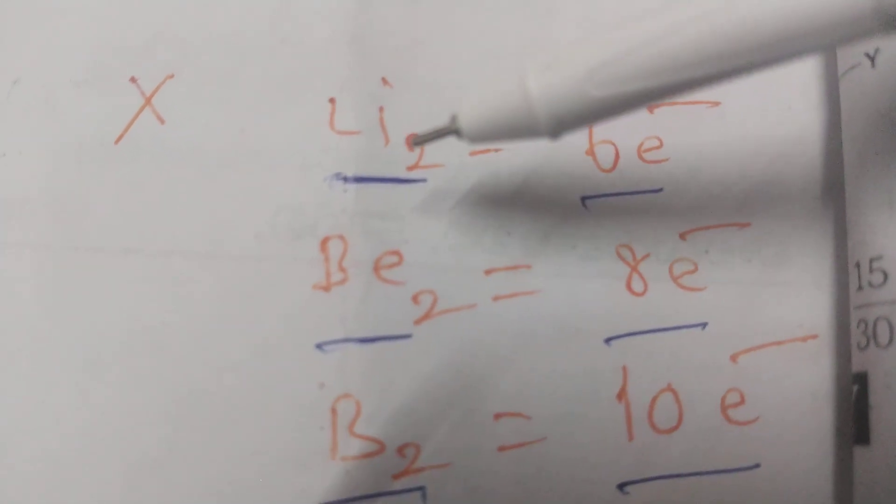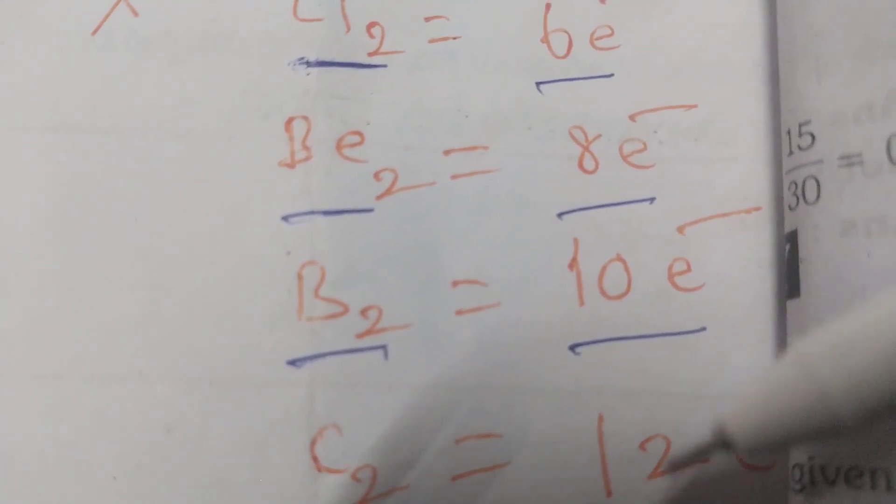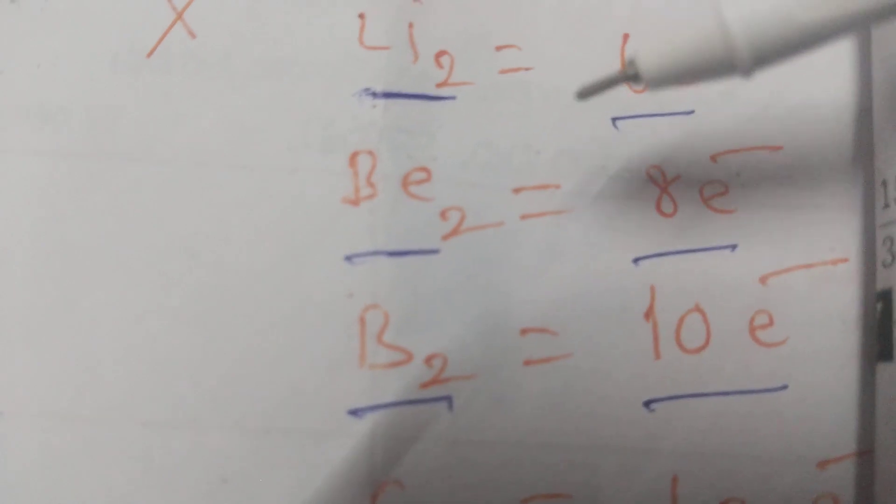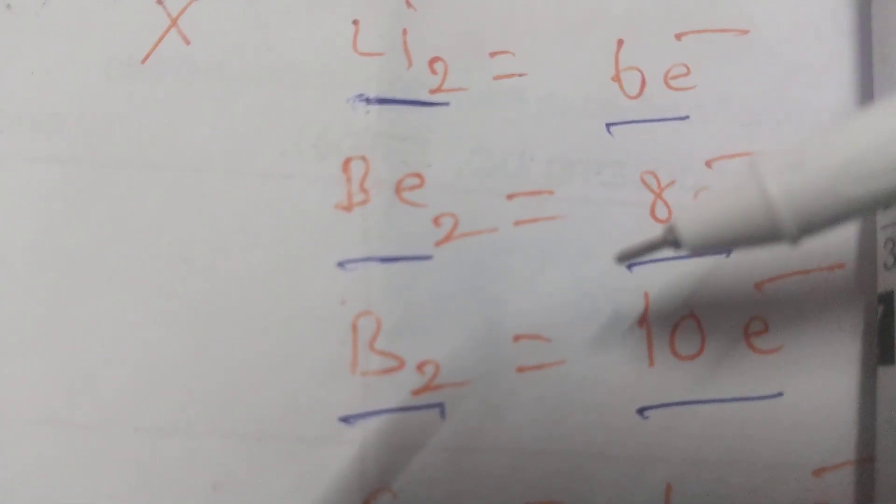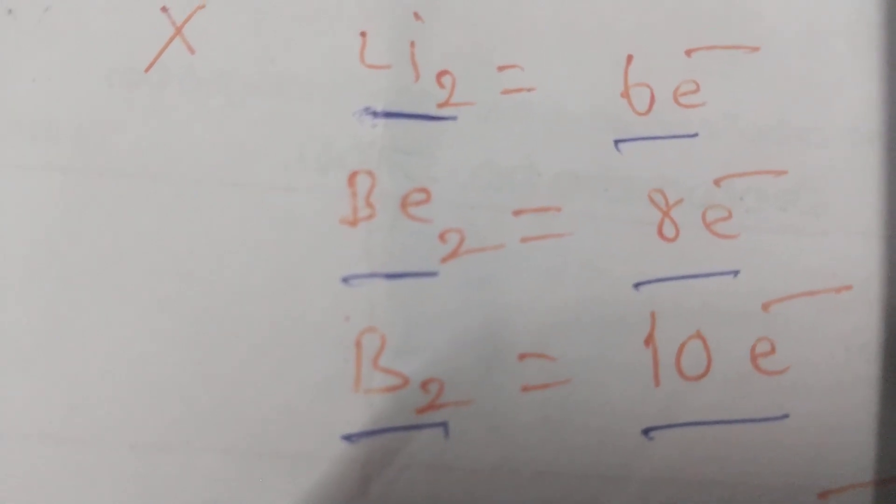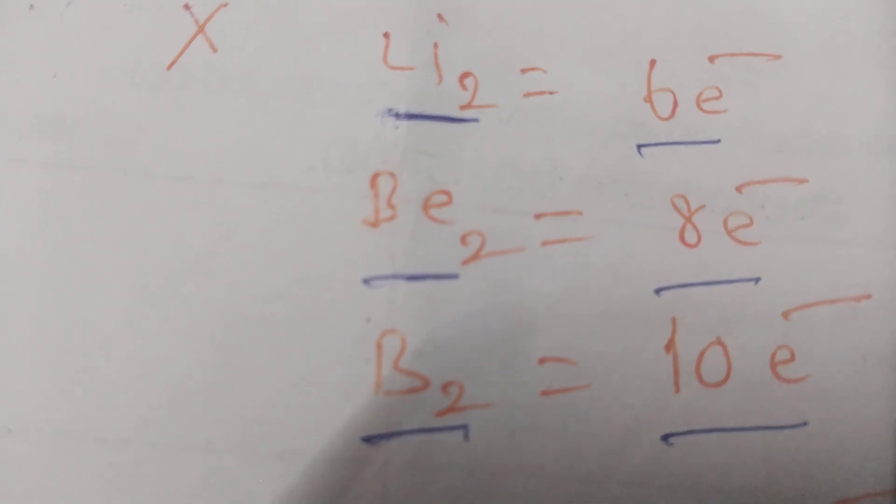This molecule exists, this molecule exists, this molecule exists because the bond order does not become 0. The bond order for Be-2 is 0, so Be-2 does not exist is the right answer. Please like, share, subscribe for EAP, NEET, competitive chemistry.